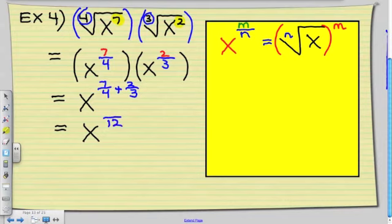So this fraction is going to change into 7 times 3 is 21, so 21 over 12, plus 3 times 4 is 12. So if I do that to my numerator, 2 times 4 is 8. So my final answer is x to the power of 29 over 12.